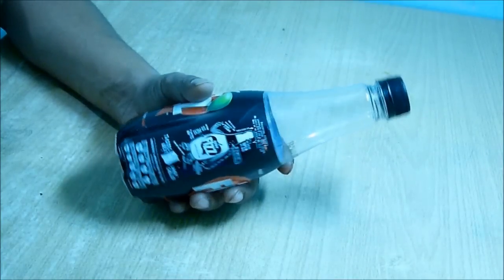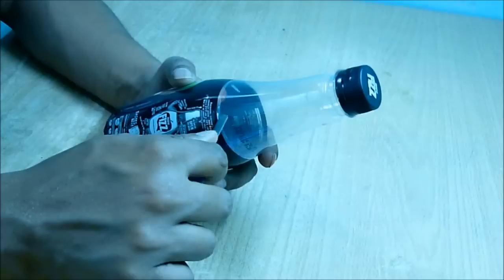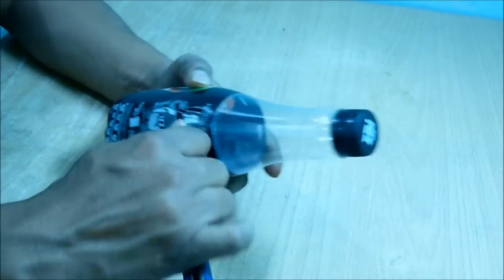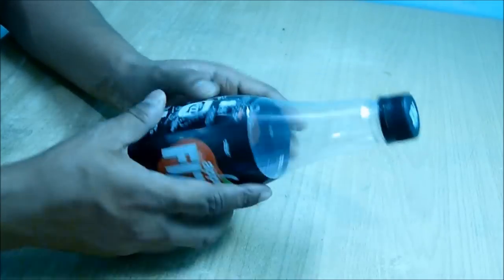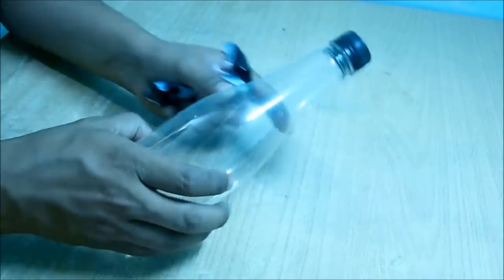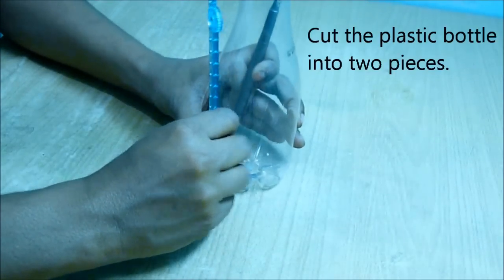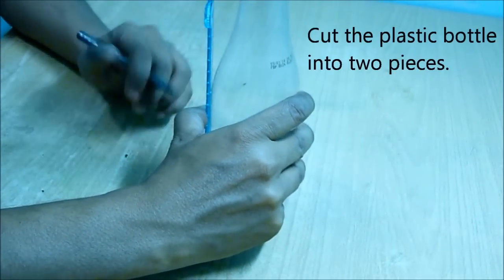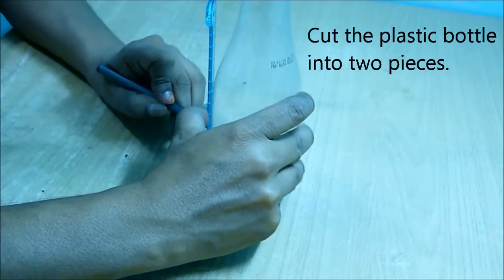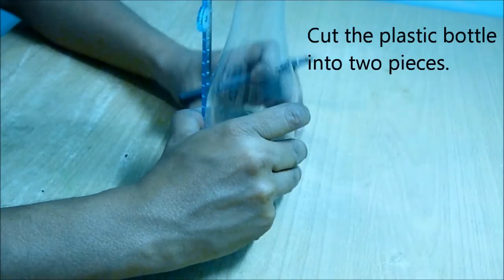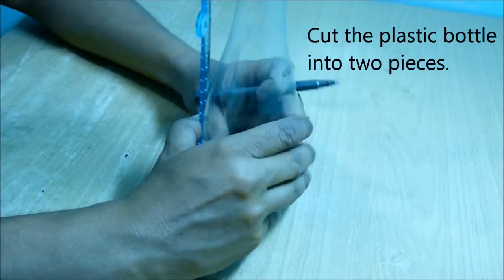Hi, today we are going to make a flower vase using a plastic bottle. This is a Coldrings bottle. First cut the plastic wrapper out, then we have to divide this bottle into two pieces. From the base, mark approximately four and a half centimeters.